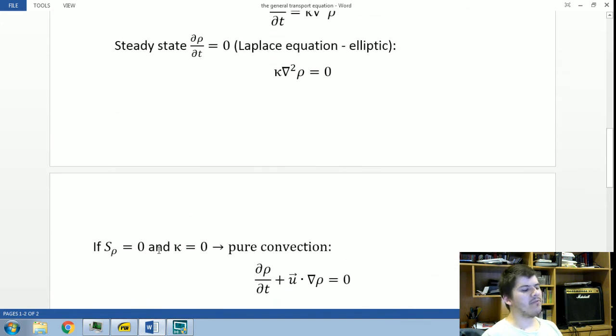And if our source term is equal to zero and we have no diffusion, we have a pure convection equation. And this term here, in some cases, can be simplified to a constant. So we have like a celerity of a certain quantity or a mean velocity.